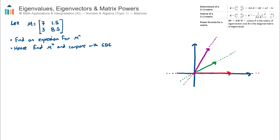This video looks at using eigenvalues and eigenvectors to find the powers of matrices. Eigenvalues and eigenvectors appear in three different areas in the AI course: topic one, which is what we're talking about here — finding powers of matrices; topic three, in geometric transformations of shapes; and topic five, in differential equations. But here the context is all around matrices and finding powers of matrices.